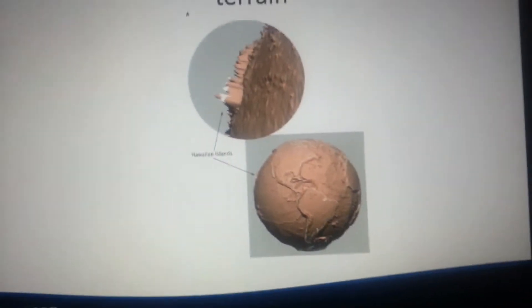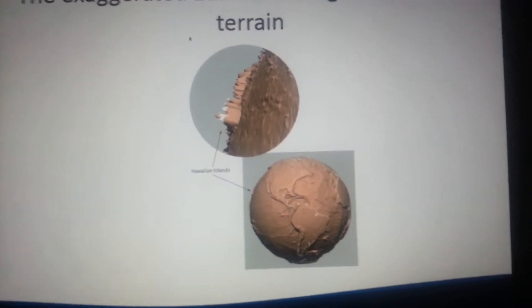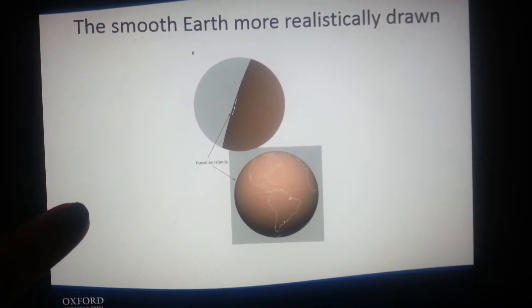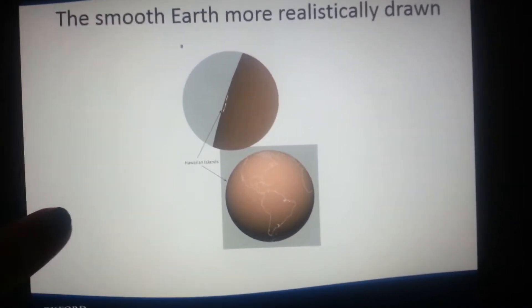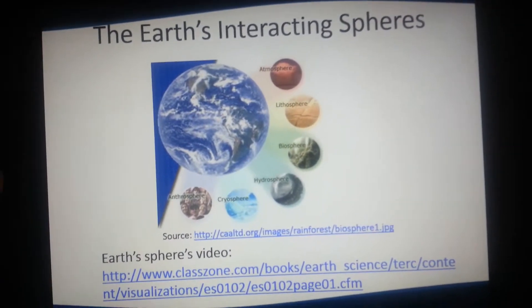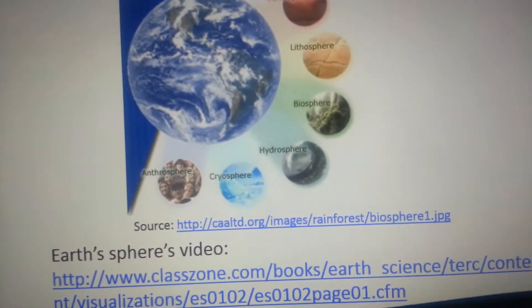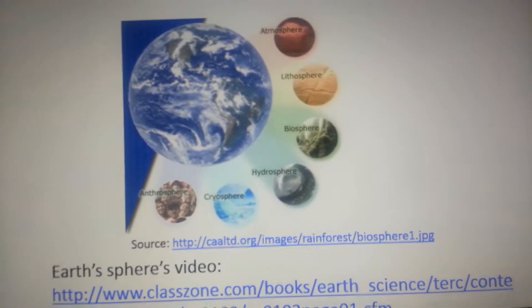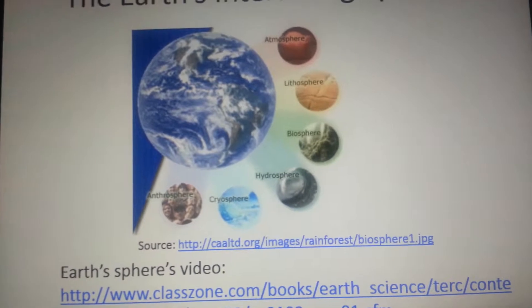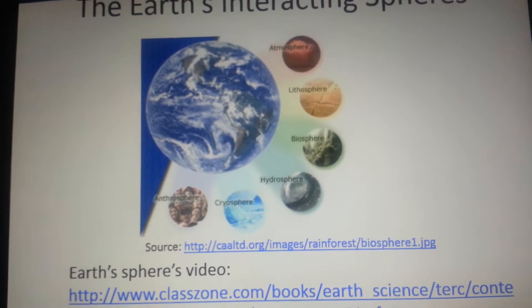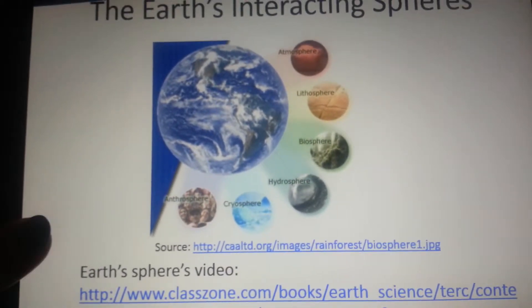This is the exaggerated way to show mountainous terrain, and then the smooth Earth more realistically drawn, because it's really not that exaggerated. And then the Earth's interacting spheres of atmosphere, lithosphere, biosphere, hydrosphere, and anthroposphere — the anthroposphere being human, the cryosphere being ice and water.